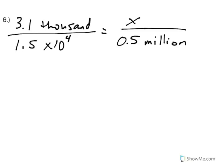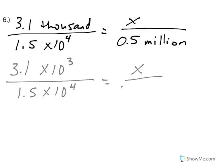In number 6, I see these words again, I'm going to change them. So I have 3.1, 1000 means times 10 to the 4th, and million means times 10 to the 6th. Now you could reduce these first if you wanted to, I don't do that in my videos, but that just adds extra steps.